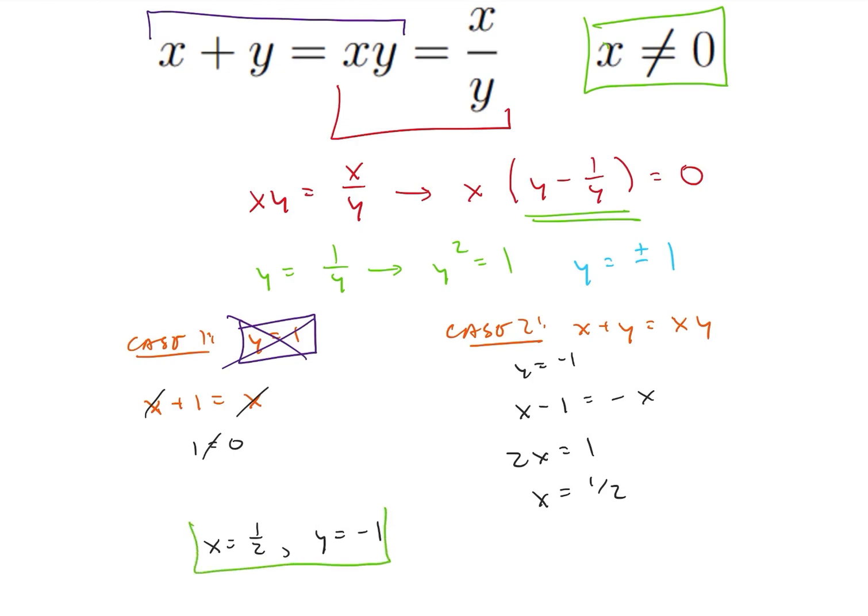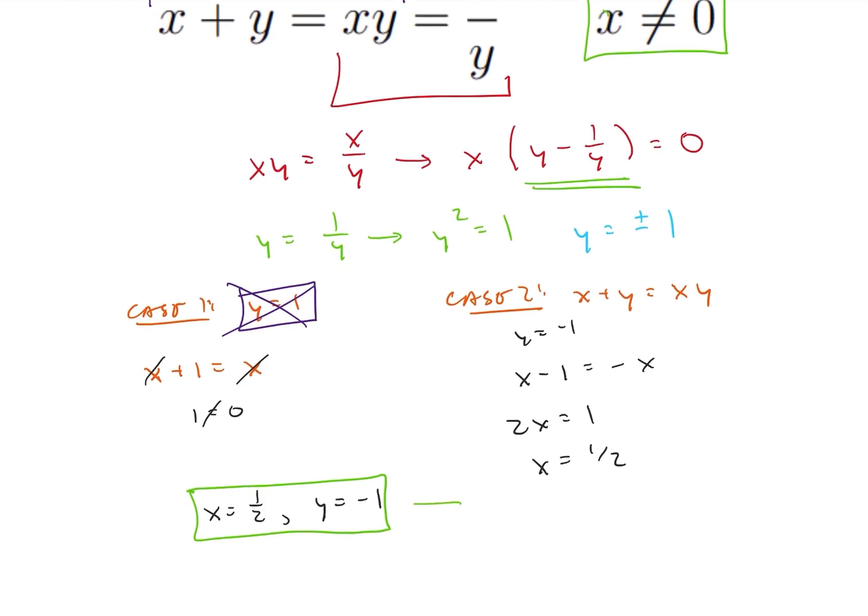Let's go ahead and test it real quick. So x plus y would be negative 1 half. x times y would be negative 1 half, and x divided by y would be negative 1 half. So this is going to be our solution. Hopefully you were able to figure that out on your own.